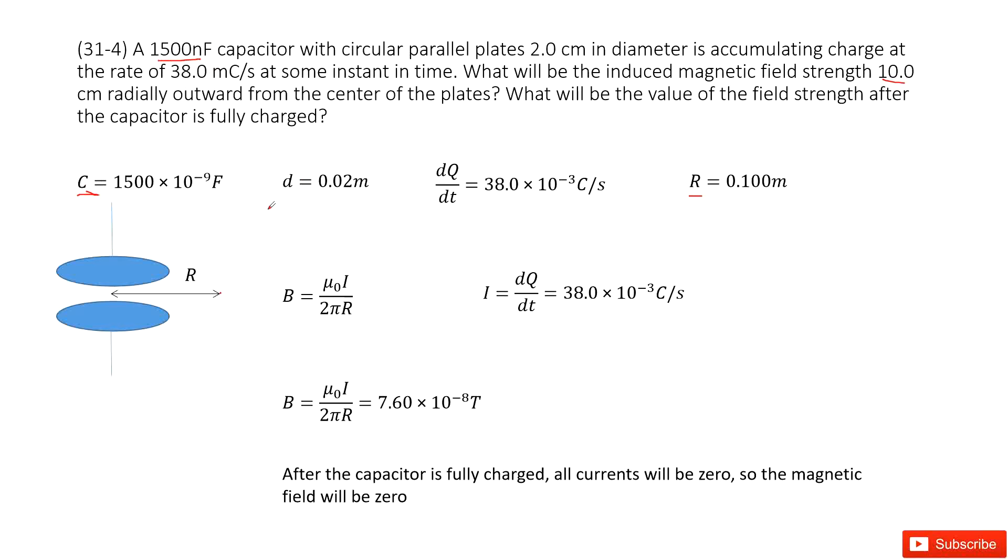And then the distance for this capacitor parallel plane is given. And also the charge changing rate is given. So we can write it as dq over dt is given.